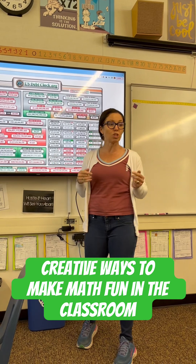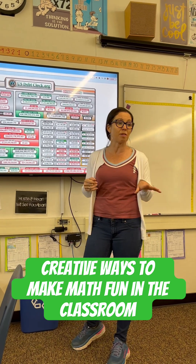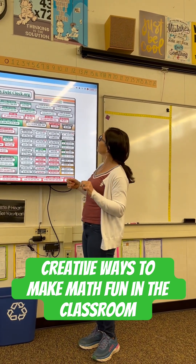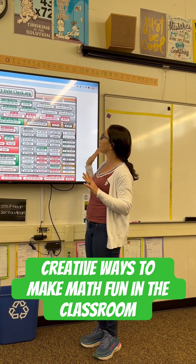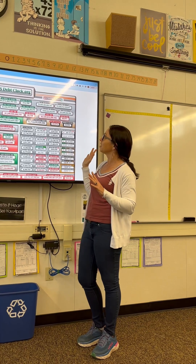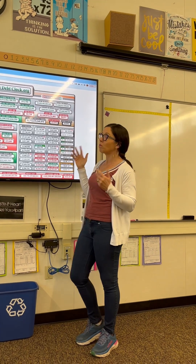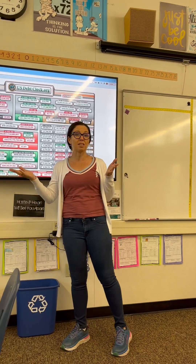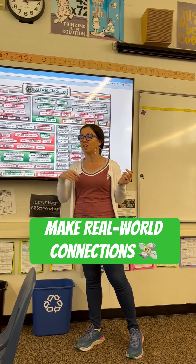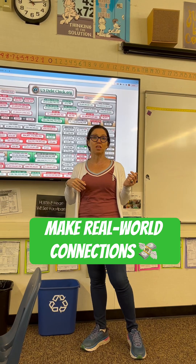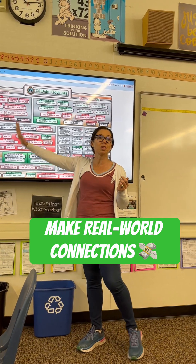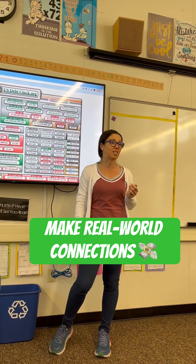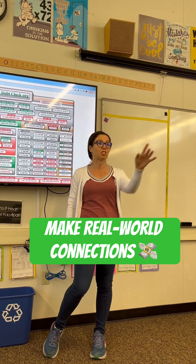So what I'm showing you today, I want you to take a look. This is called the U.S. Debt Clock. Now we've been learning about positive and negative integers. So what do you think the green represents in this United States debt clock?